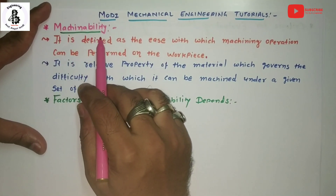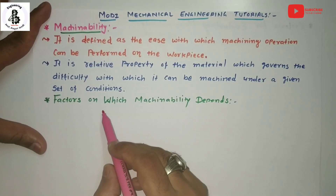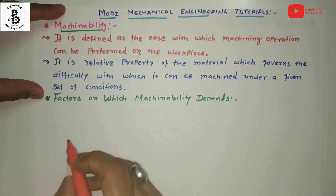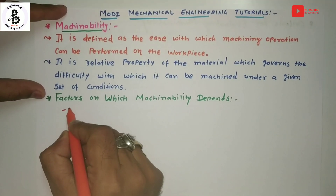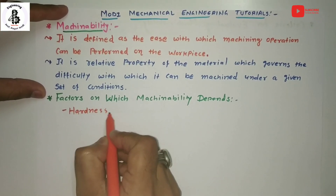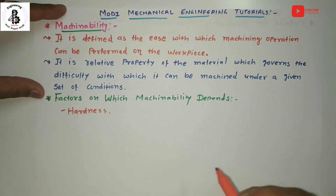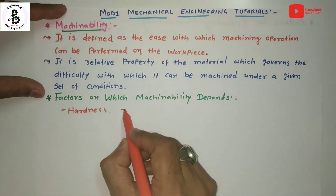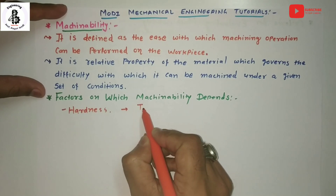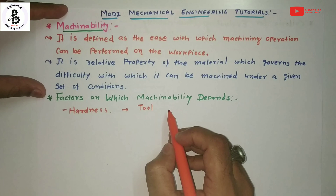Now let us look at the factors on which machinability depends. The first basic factor is hardness. For metal cutting operations, hardness plays an important role — the tool material must be harder than the workpiece material, and that is the basic requirement for good machinability.